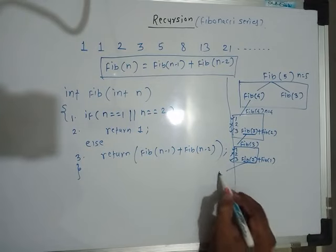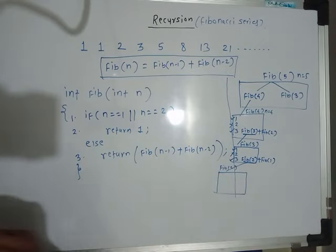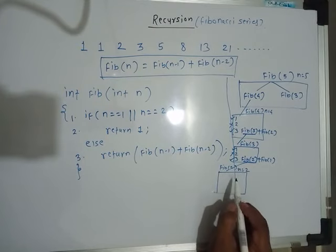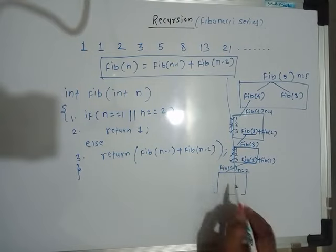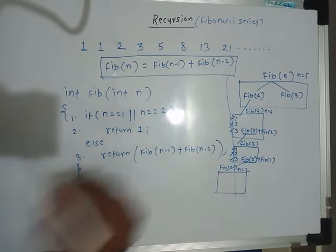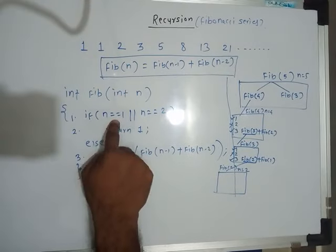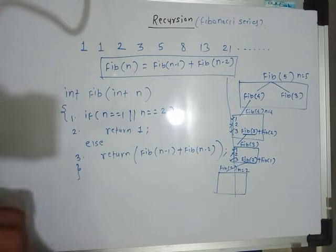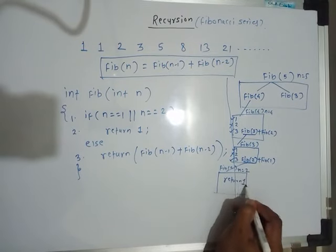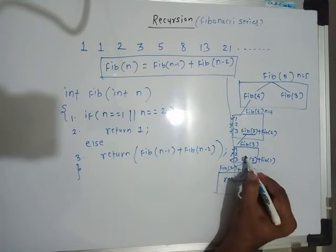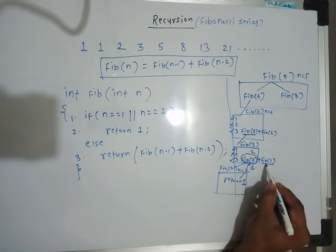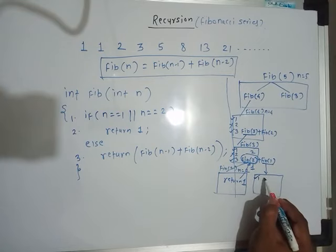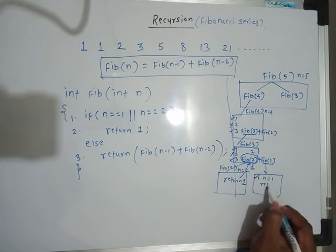We execute Fib(2): n equals 2, so statement 1's condition is true (n equals 1 or n equals 2), and we return 1. That 1 replaces this Fib(2) call. Then we execute Fib(1): again statement 1's condition is true since n equals 1, so we return 1.